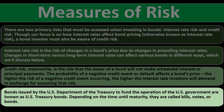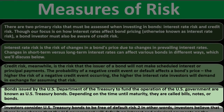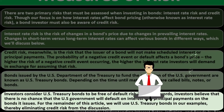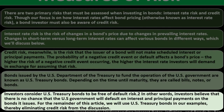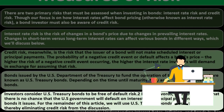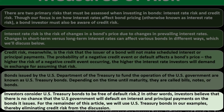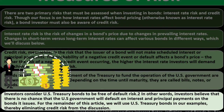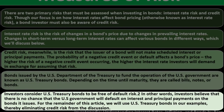Bonds issued by the U.S. Department of the Treasury are known as U.S. Treasury bonds — called bills, notes, or bonds depending on time to maturity. Investors consider U.S. Treasury bonds essentially free of default risk, because the U.S. government has the power to tax and print money. A default would be catastrophic, making it extremely unlikely — as close to zero risk as we can get in bond investing.